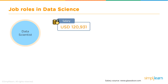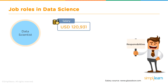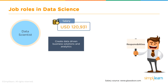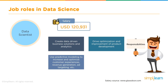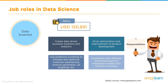A data scientist earns around $120,000 US dollars per year. Their responsibilities include creating data-driven business solutions and analytics, driving optimization and improvement of product development, using predictive modeling to increase and optimize customer experience, revenue generation, and targeting, and coordinating with different functional teams to implement models and monitor their outcomes.